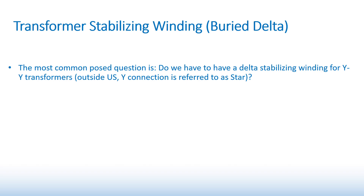A stabilizing winding is basically used for harmonic suppression — the bushings or terminals are not brought out. The tertiary winding is used for supplying power, like to station service at the substation.